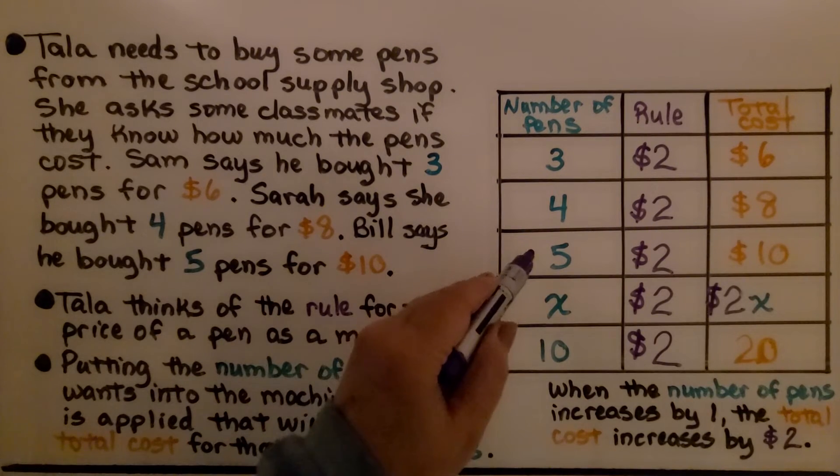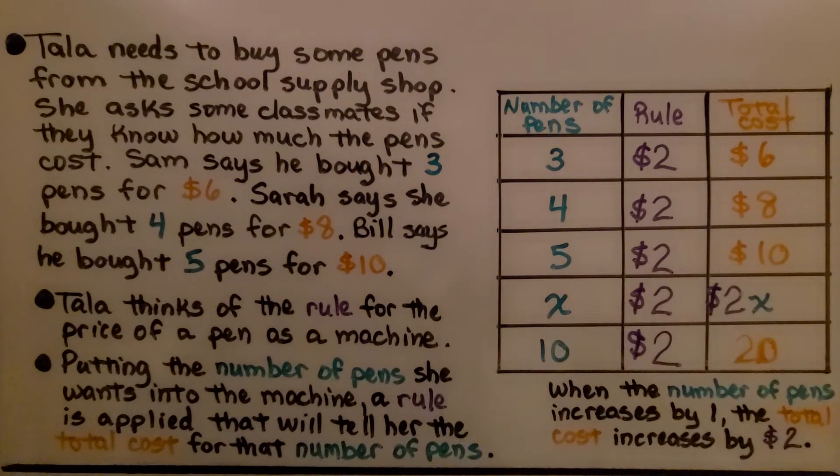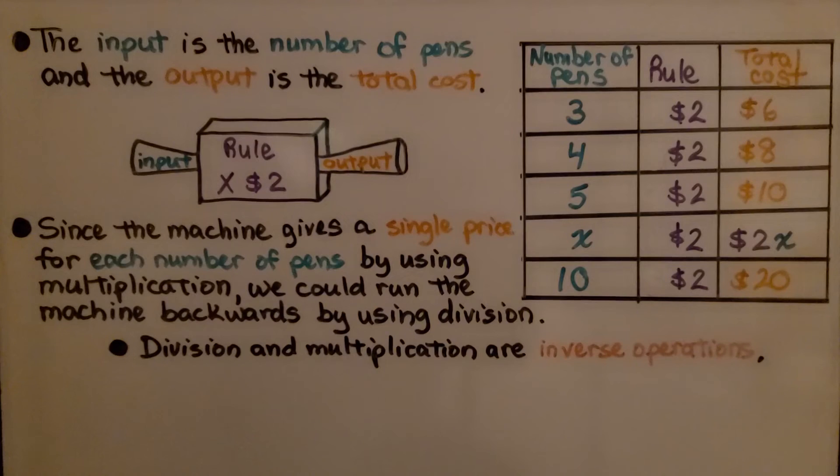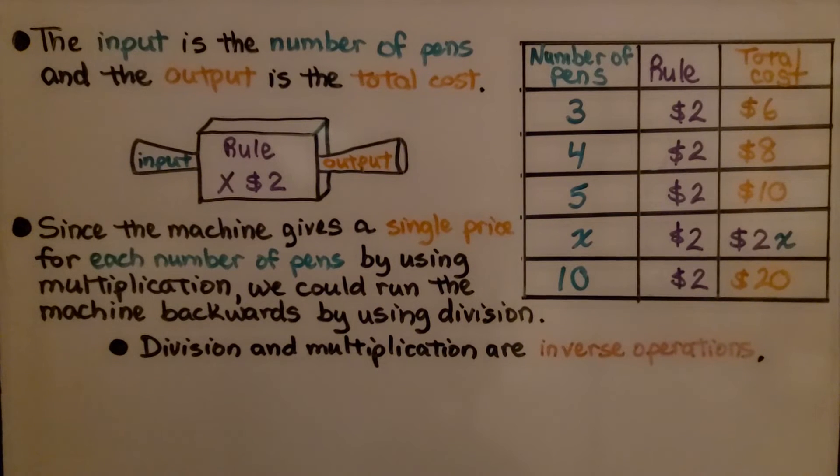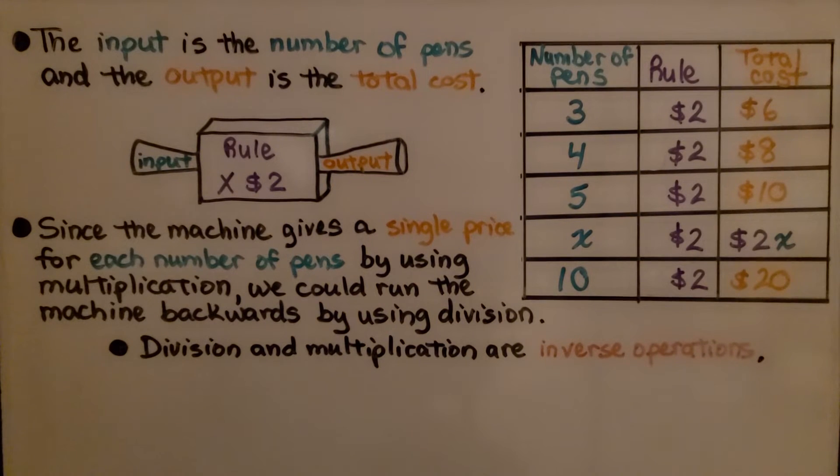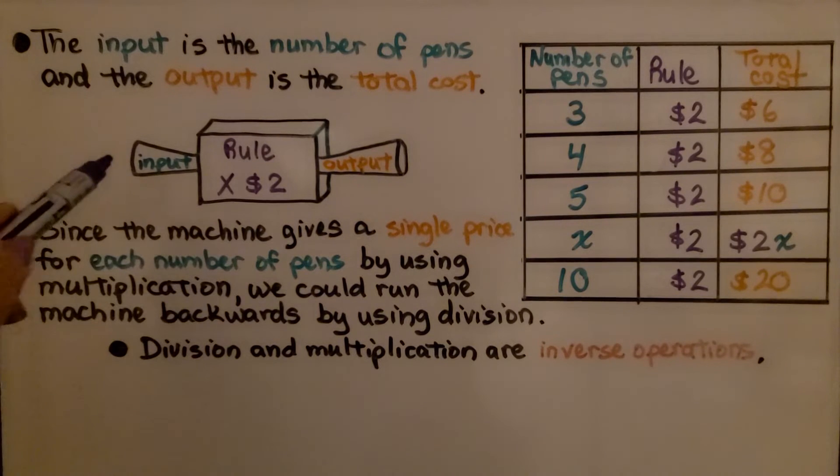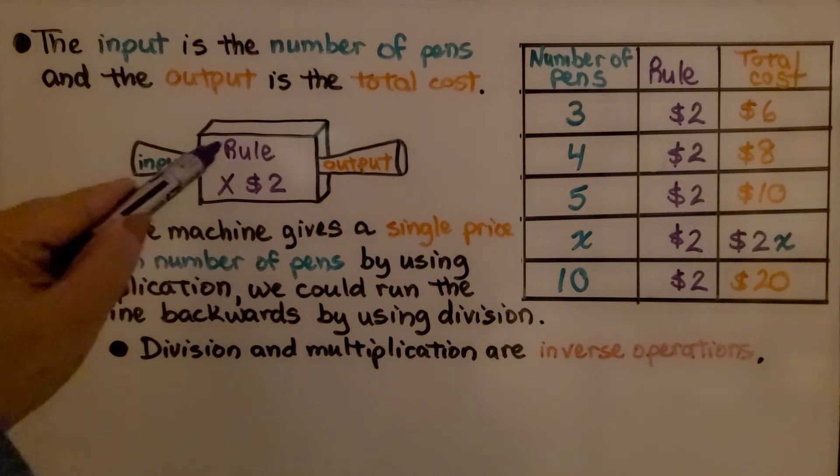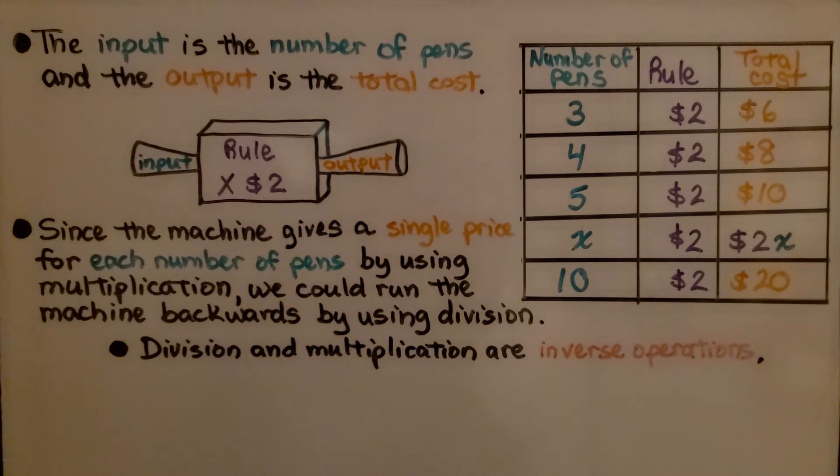We have our input, our rule, and our output. The input is the number of pens and the output is the total cost. We are putting it into our machine and the rule is to multiply it by 2 dollars.